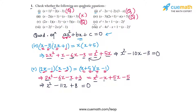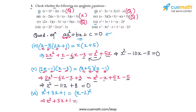In part six, the equation is x² + 3x + 1 = (x − 2)². Expanding the right side gives x² − 4x + 4. We can see that the x² terms on both sides will cancel out, and this will actually reduce to a linear equation in x. So the equation in part six is not a quadratic equation.